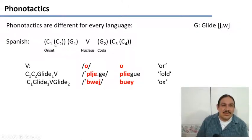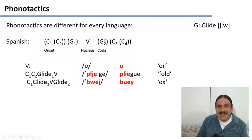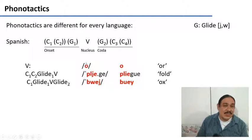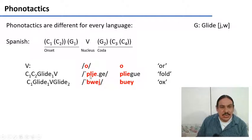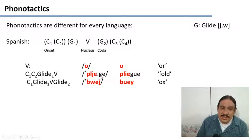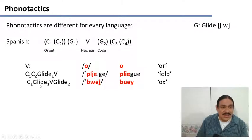So in Spanish you can have two consonants in the onset, an optional glide, a required nucleus, an optional glide at the start of the coda, and then up to two consonants in the rest of the coda. For example, 'o,' meaning 'or,' is just a nucleus. 'Pliege,' meaning 'fold,' has two consonants and a glide in its onset. And 'buey,' meaning 'ox,' has a consonant, a glide in the onset, then a vowel, and a glide in the coda.